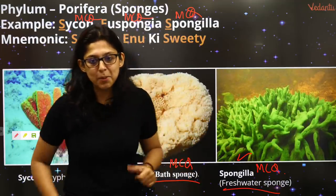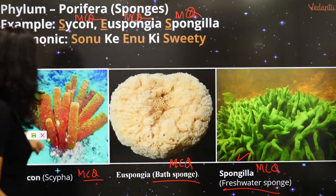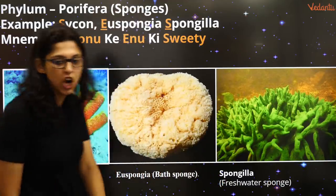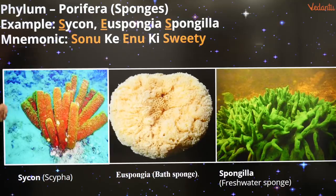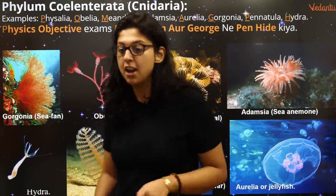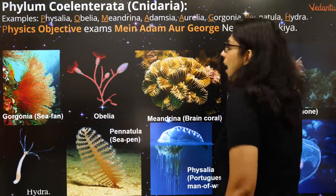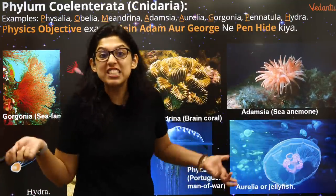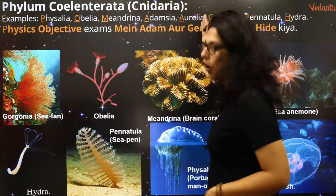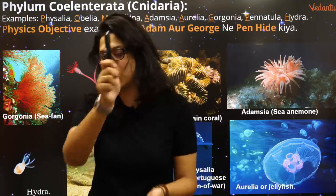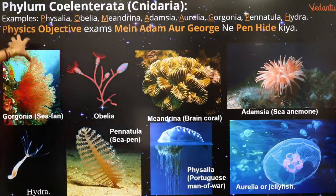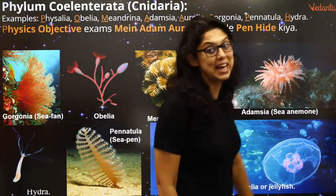Should we have mnemonic number two? Take screenshots of mnemonic number two on the screen. Phylum Coelenterata ka mnemonic: 'Physics objective exams me Adam aur George ne pen hide kiya' — because they don't know physics. Adam and George were like your Vani Ma'am — really bad with physics and maths. So they had to hide the pen.